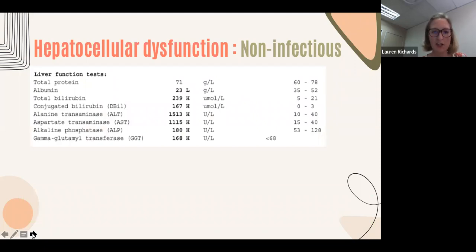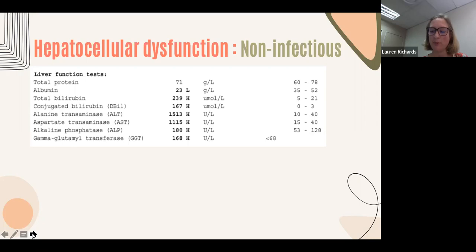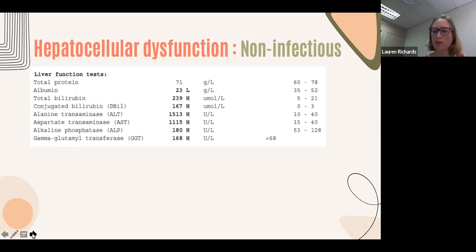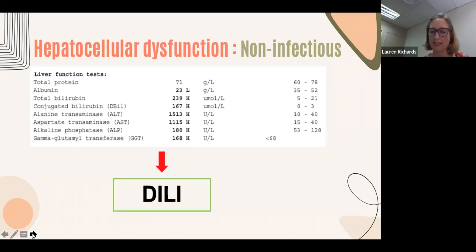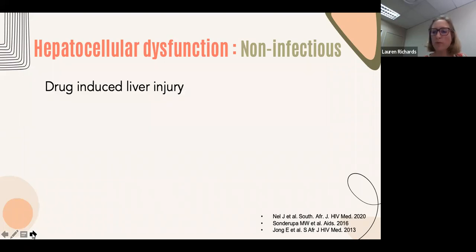As an example of a non-infectious hepatocellular pattern: a 35-year-old male diagnosed with HIV in November 2022, started on TLD, then diagnosed with pulmonary TB one month later (a TB unmasking IRIS). He presented three weeks after starting TB treatment with a markedly abnormal LFT and an INR of 2.34. After excluding infectious causes, he was diagnosed with drug-induced liver injury (DILI) secondary to TB treatment.